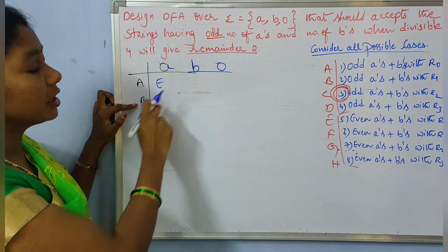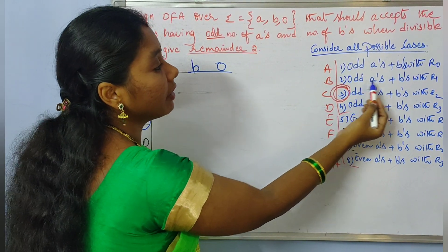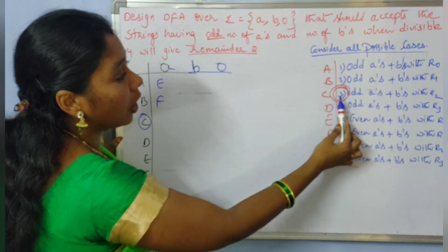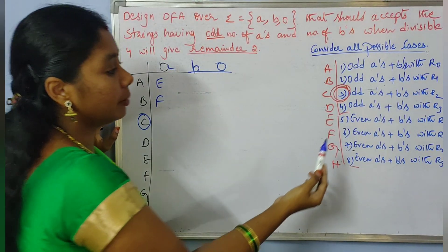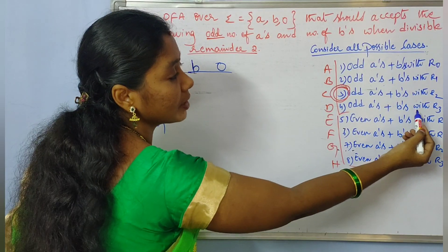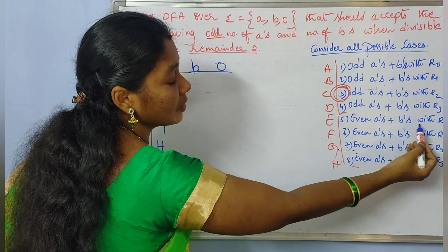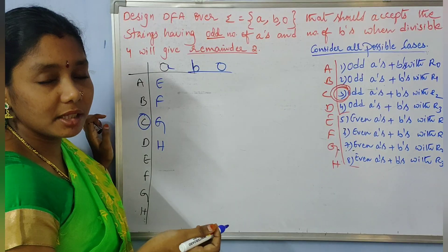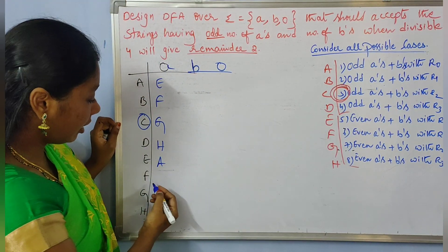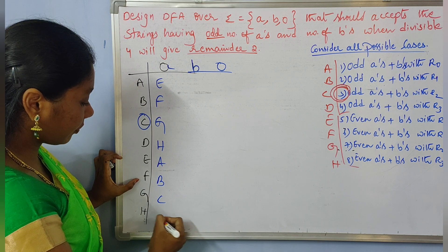From state E (even A's, B's remainder 0), adding 'a' makes the A count odd, giving state A. From state F with 'a', we go to state B. Similarly, states G and H transition to states C and D respectively with input 'a'. So for all states, input 'a' toggles the odd/even parity of A's, cycling between the corresponding odd and even states while keeping B's remainder unchanged.